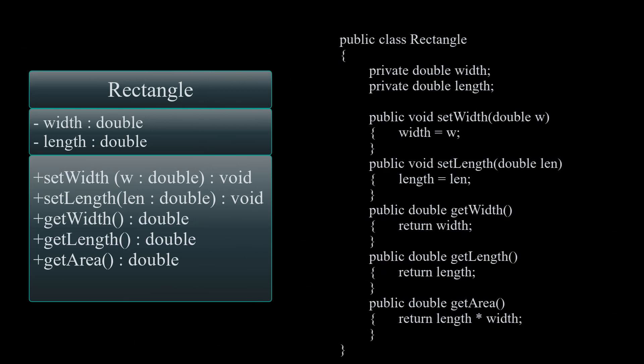The name of the class file is Rectangle, so we have public class Rectangle. Moving on to our fields, which are private width and private length — the type is double in both of them. The final part is our methods, which are public. We have our setters and getters: public void setWidth and setLength, and then our getters, getWidth and getLength.